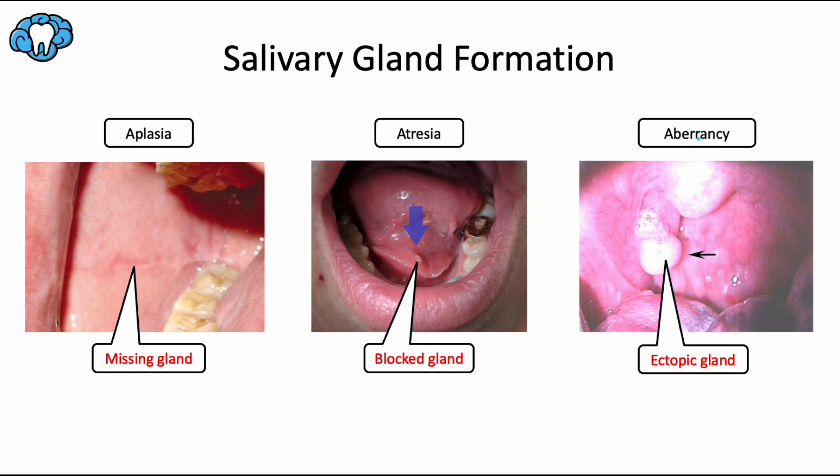And finally, we have salivary gland aberrancy, which is where we have a normal salivary gland developing in an abnormal position. For example, ectopic salivary gland tissue could develop on a palatine tonsil, like we see the arrow pointing to in this image.